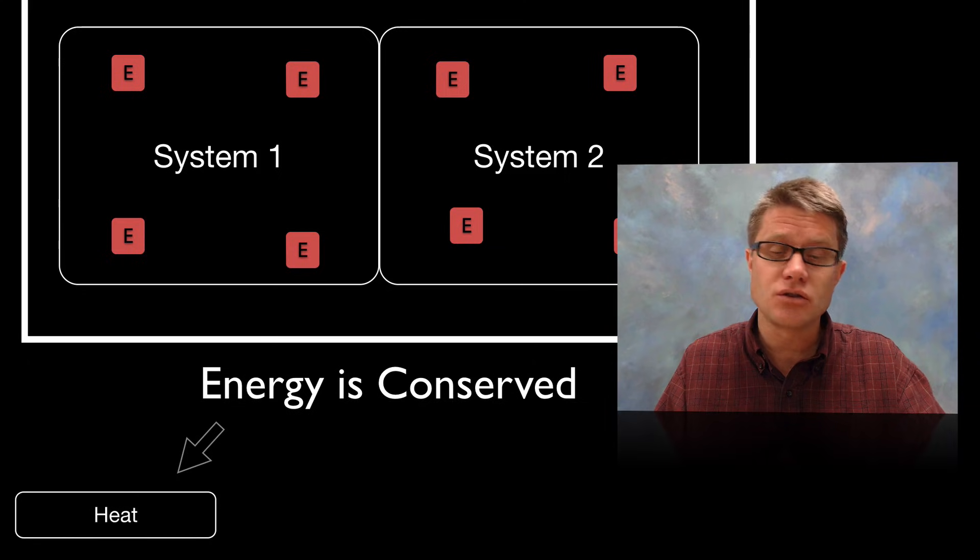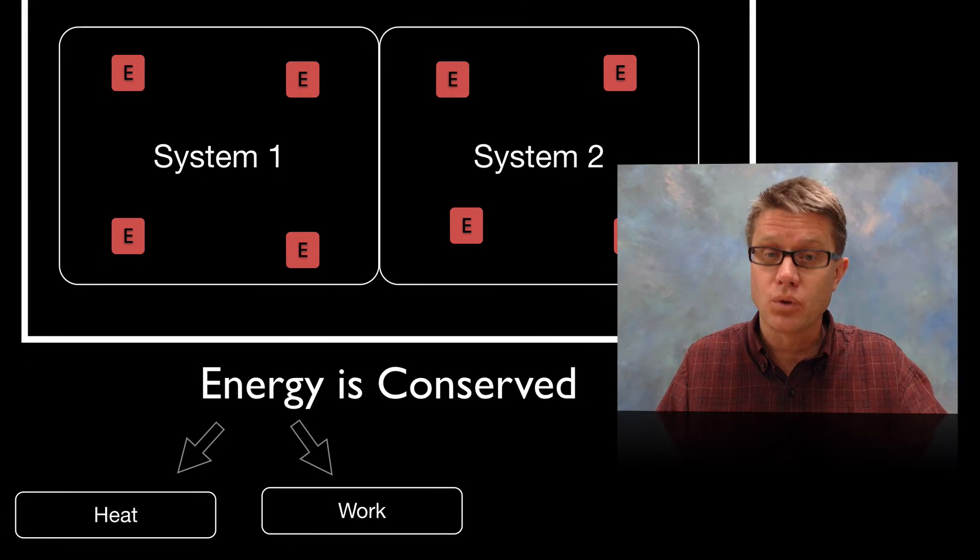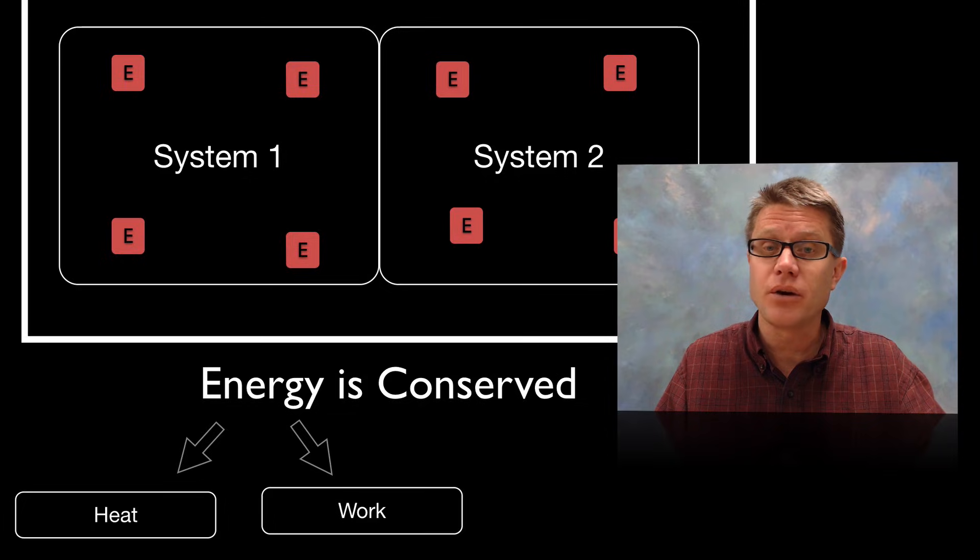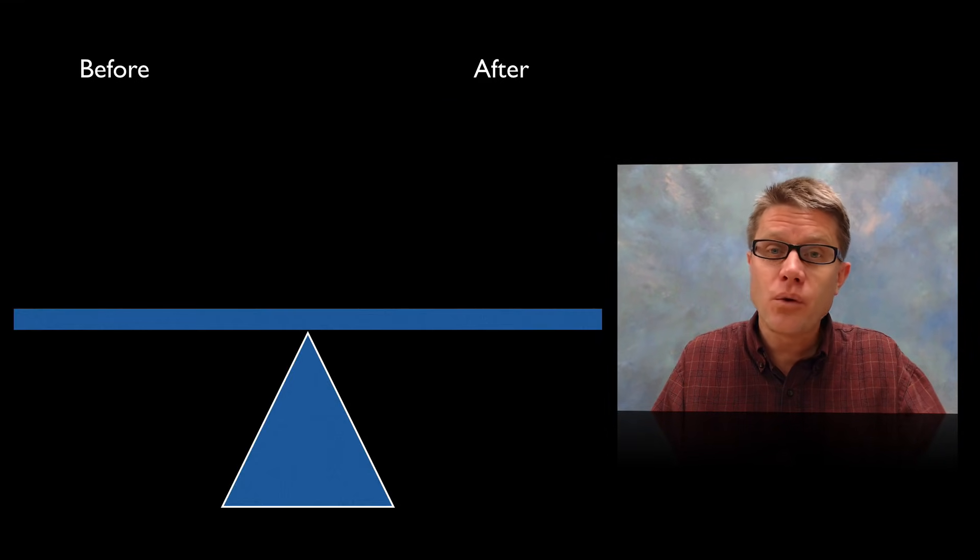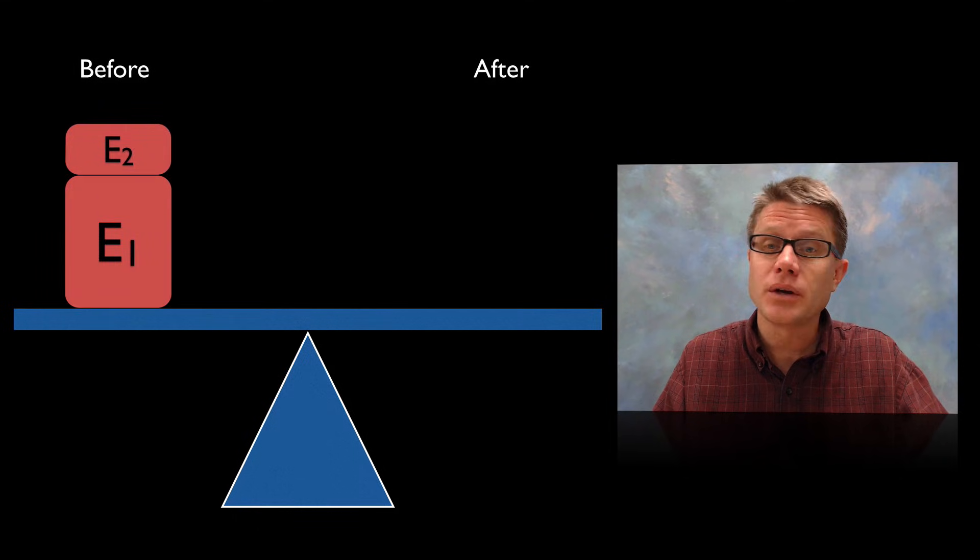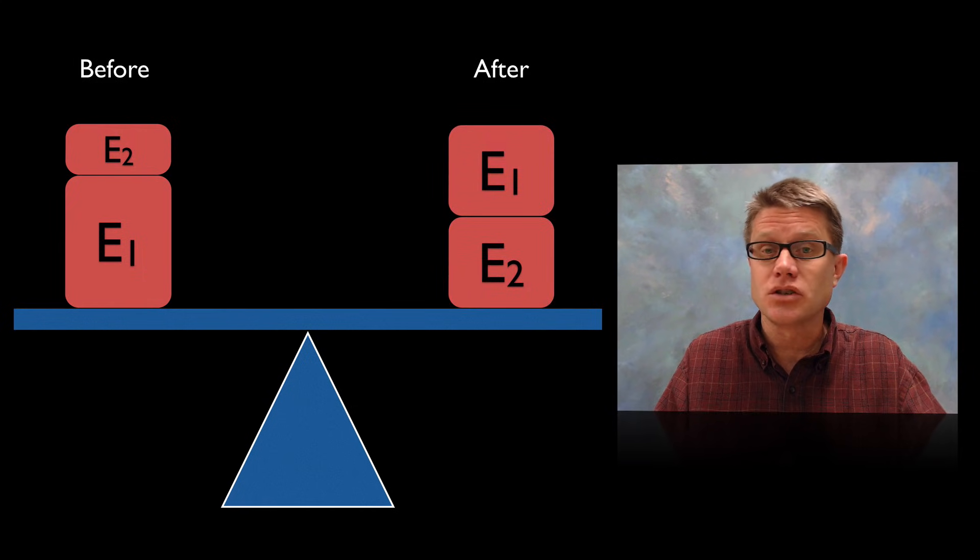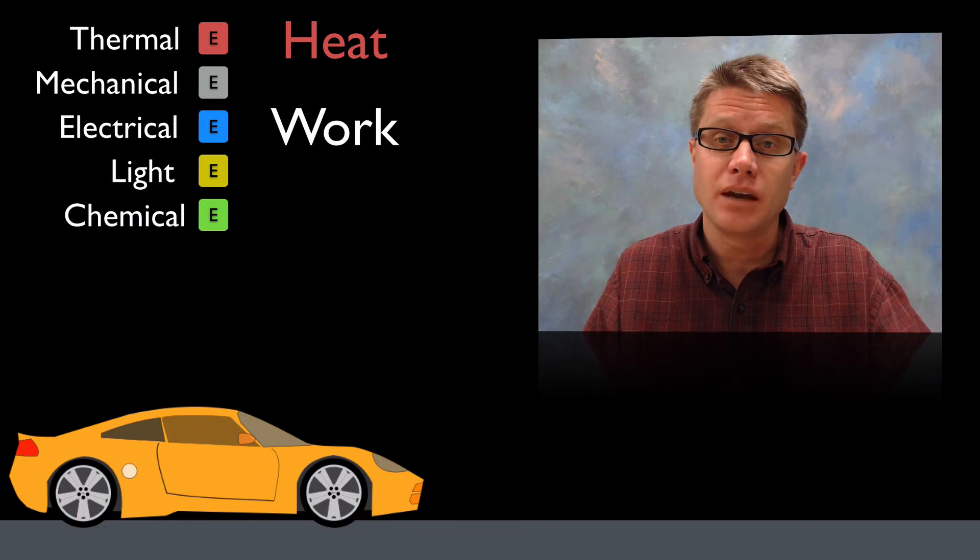Now that energy could be energy transferred through heat or it could be energy transferred through work. The amount of energy we have before and after has to be equal or conserved. System 1 had more energy to begin with than system 2. There was energy being transferred but the overall energy that we had had to stay the same.